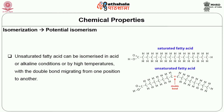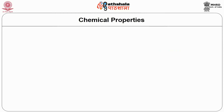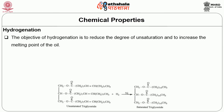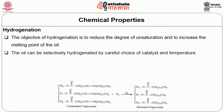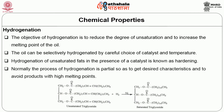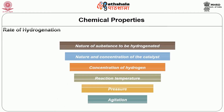Positional isomerism: the unsaturated fatty acid can be isomerized in an acid or alkaline medium with the double bond migrating from one position to another. Hydrogenation: the objective is to reduce the degree of unsaturation and increase the melting point of the oil. The oil can be selectively hydrogenated using a suitable catalyst and temperature — this process is also known as hardening. Normally hydrogenation is partial to obtain desired characteristics and to avoid a product with a very high melting point. The rate of hydrogenation is affected by the nature of the substance, concentration of hydrogen, temperature, pressure, and agitation.